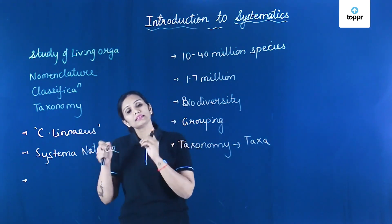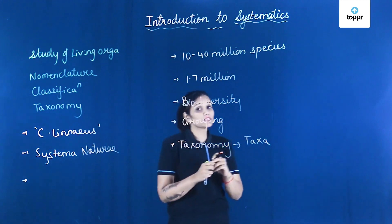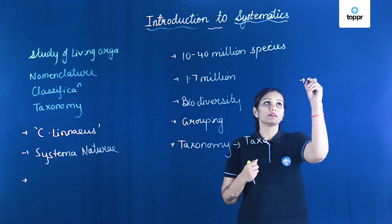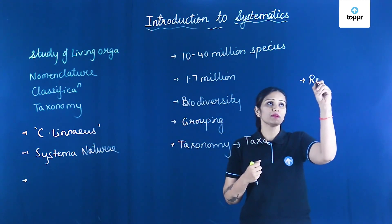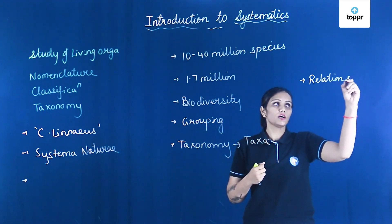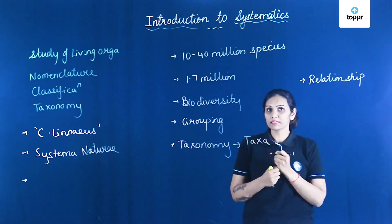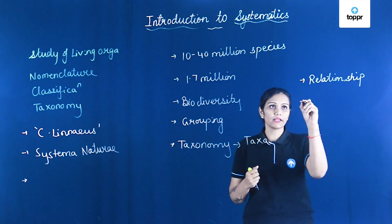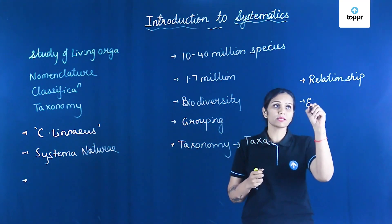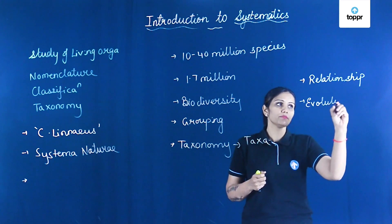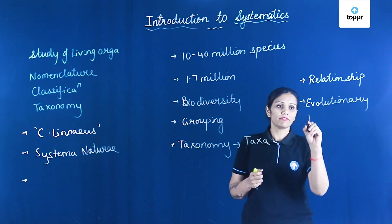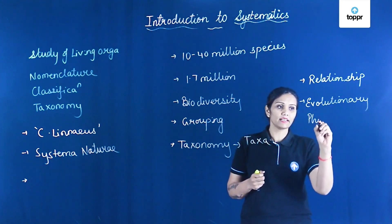Systematics is a branch of science which tells us about the relationship among living organisms — how they are similar and how they are dissimilar. It also tells us about the evolutionary relationship between them, that is the phylogenetic relationship.